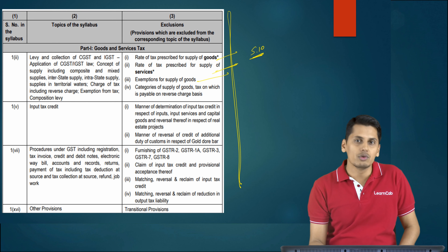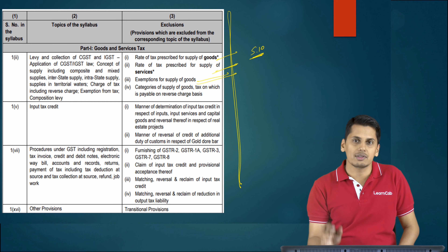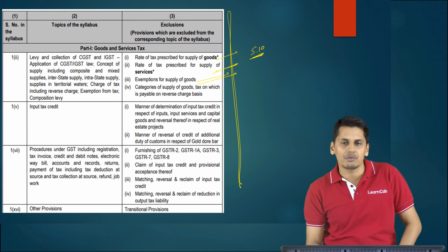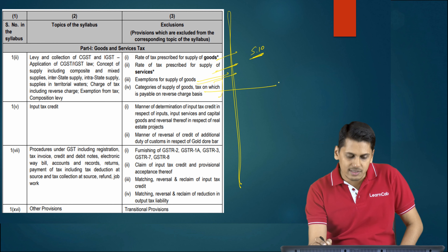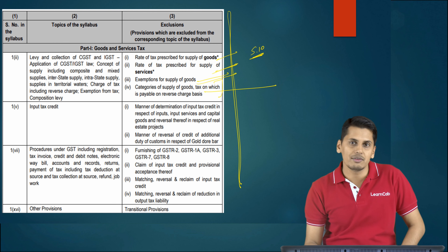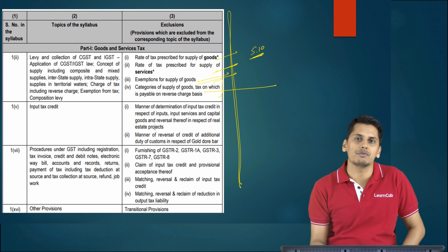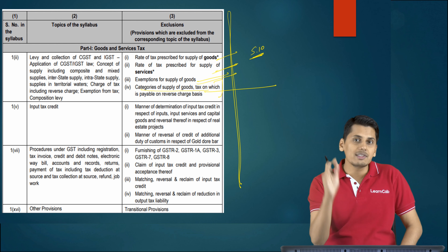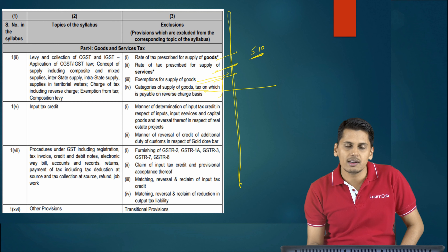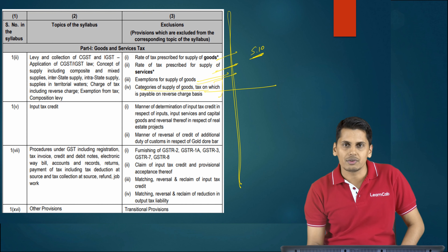Exemption for supply of goods is not required. However, exemption for supply of services is very much a part of your syllabus. Categories of supply of goods on which tax is payable under reverse charge mechanism are not part of your syllabus. However, categories of supply of services on which tax needs to be paid under RCM are very much part of your syllabus.